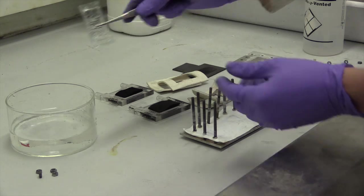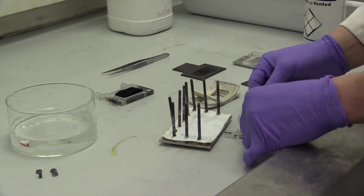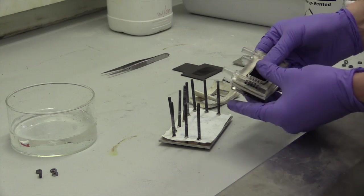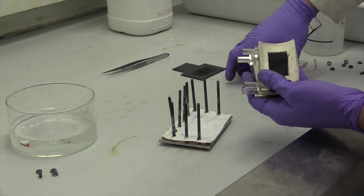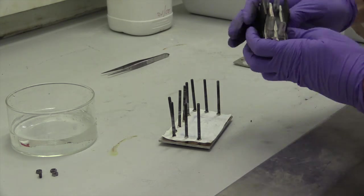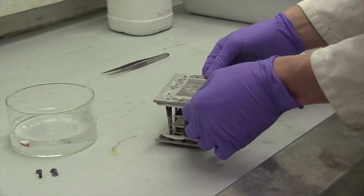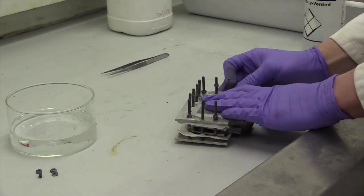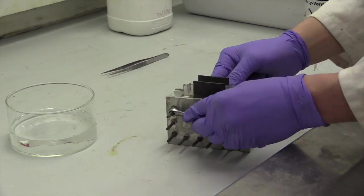Then, gaskets are used to seal the nafion membrane in place between the half cells. Gaskets are then placed between the half cell and the carbon polymer current collector, and the whole assembly is placed inside the aluminium endplates. The clamping bolts are then tightened to compress the gaskets and seal the cell.